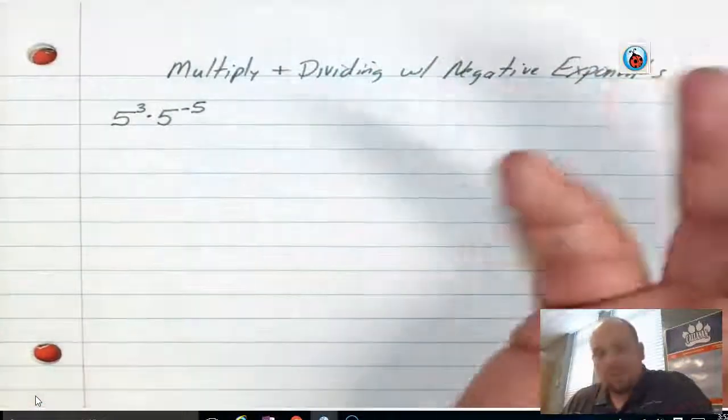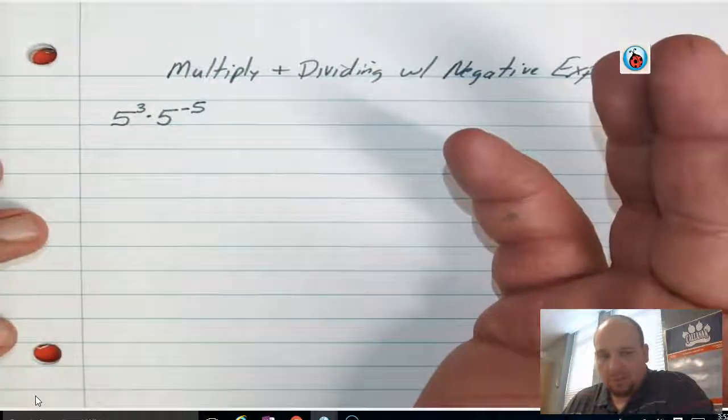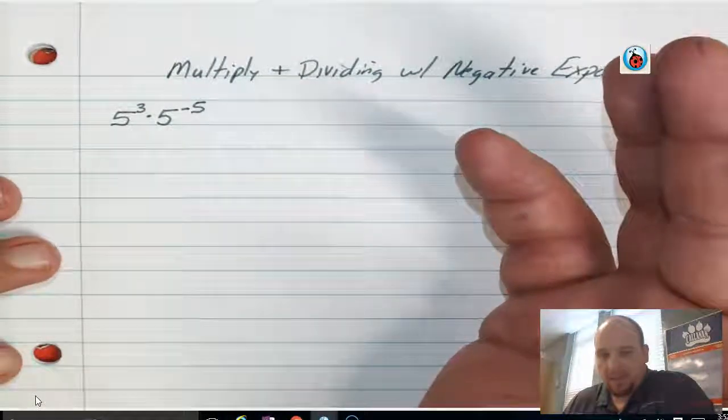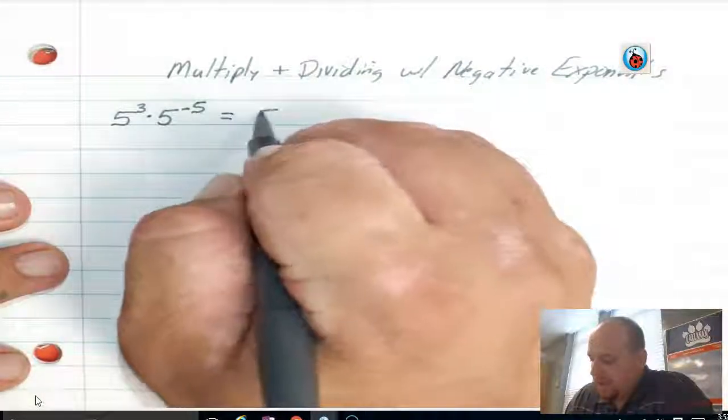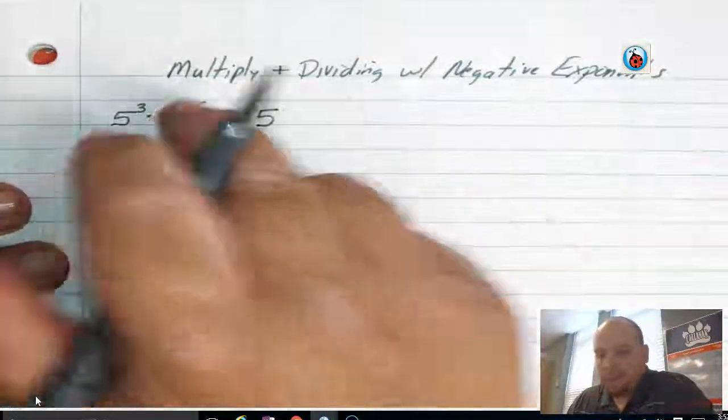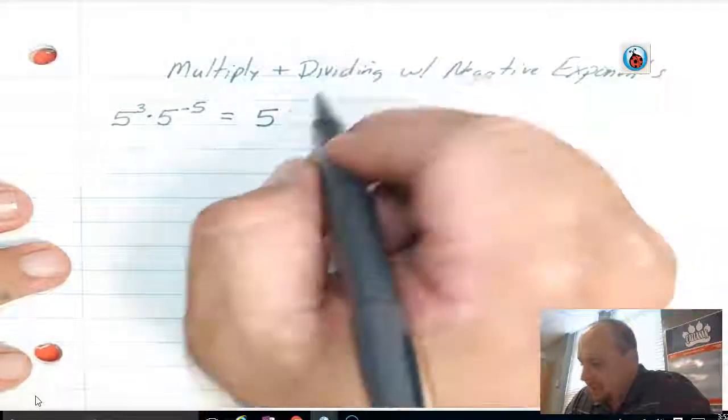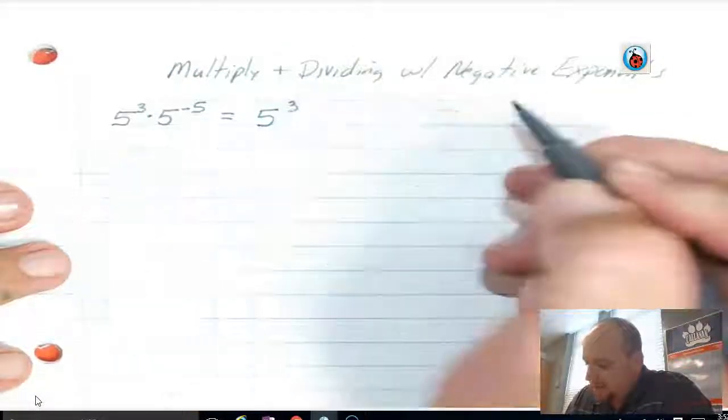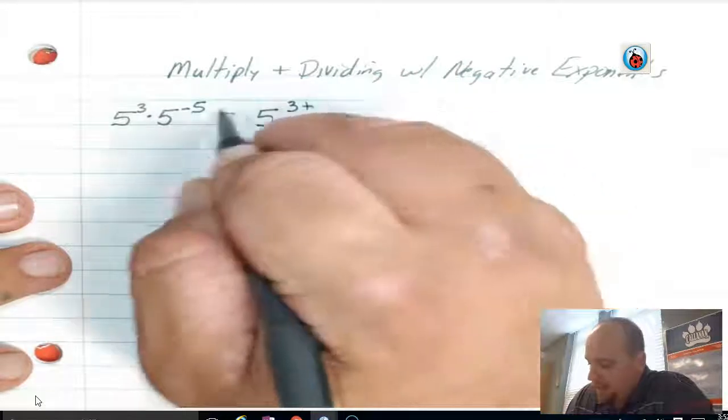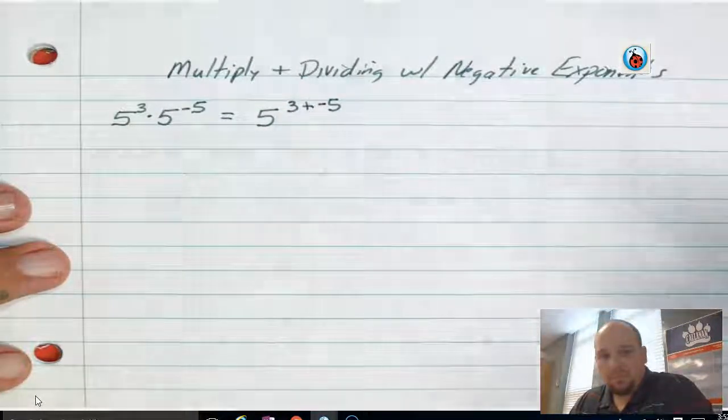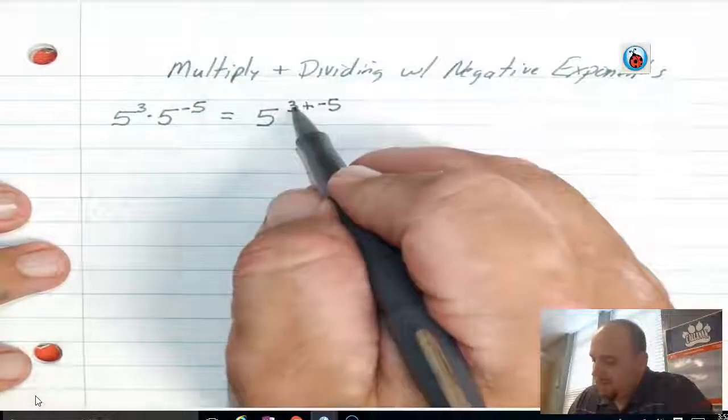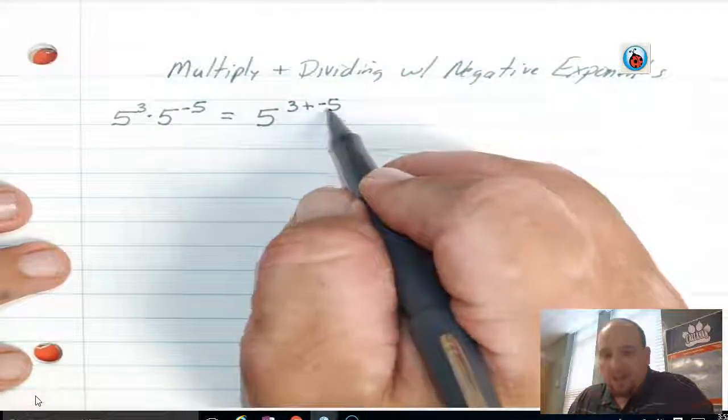If we think back, what did we do when we multiplied when we had the same base? We took the base, we kept the base 5, and then we took the powers and we added those together, much like we're going to do here. We're going to take 3 and we're going to add it to the other exponent, which is negative 5. So I have 5 to the third plus negative 5.